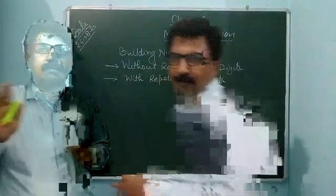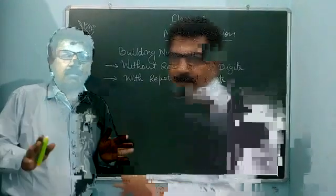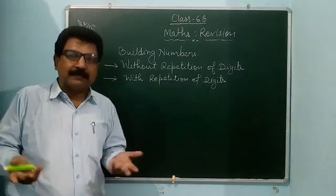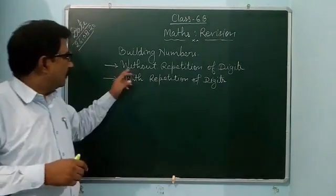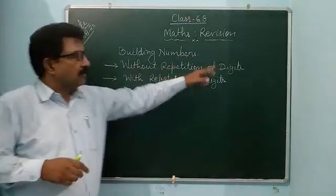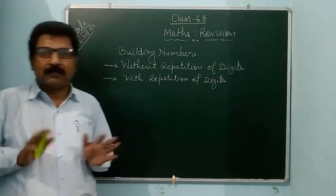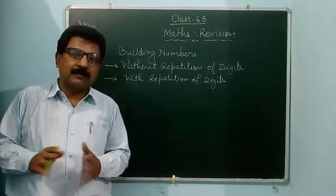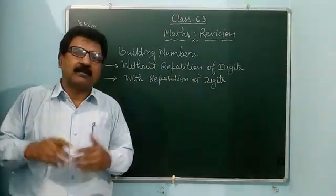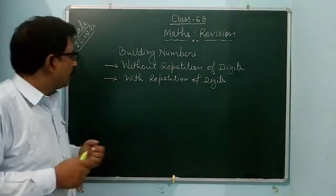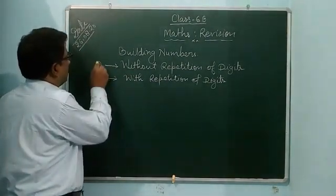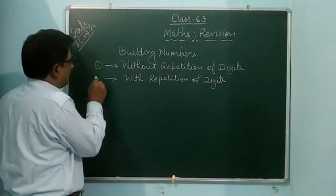Without repetition, this means you can build a longer number. The test number is my list number without repetition of digits. When digits are given but you don't repeat any digit to build the numbers, how is this possible? See, in the first place, see.